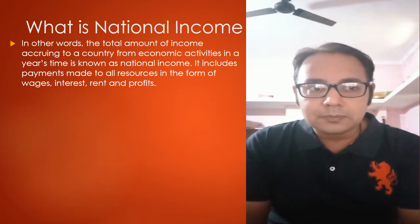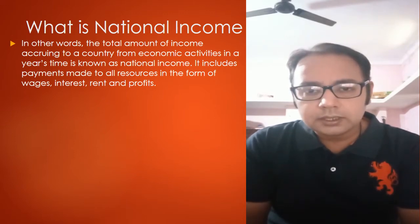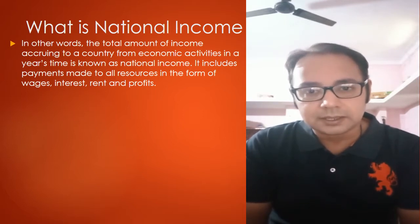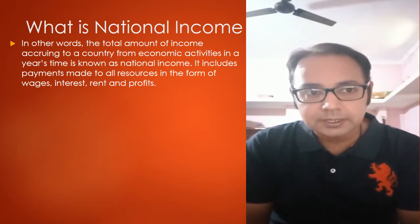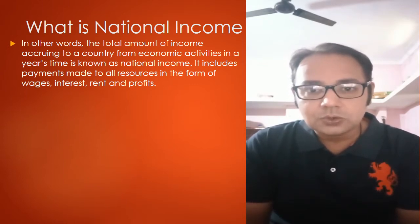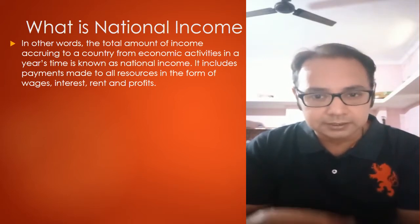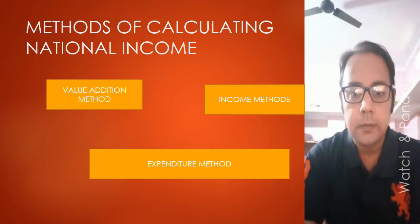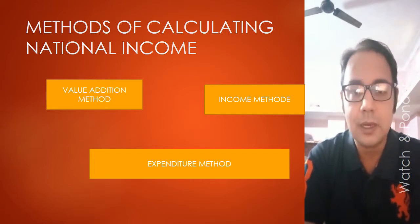In economics there is a term called Factor Input, also called Factor Cost. In Factor Cost there are mostly four things: Land, Labor, Capital, and Entrepreneurship. These are the four things that are in Factor Cost, and our definition also talks about this. Now we are on Slide No. 3, called 'Methods of Calculating National Income.'